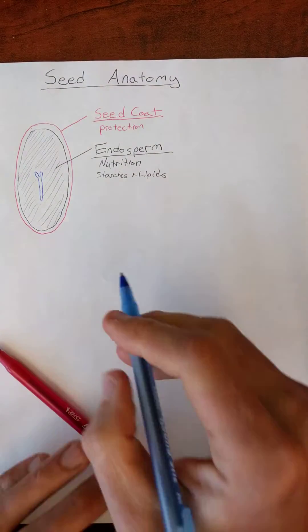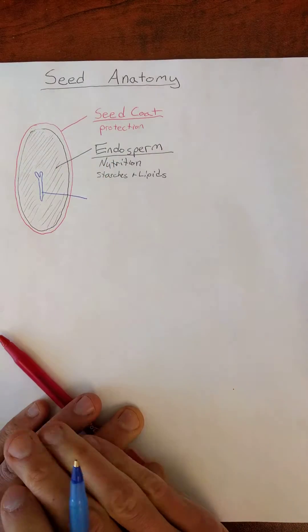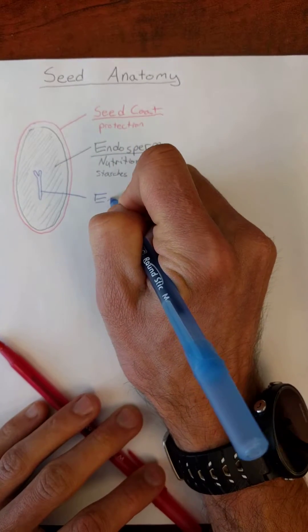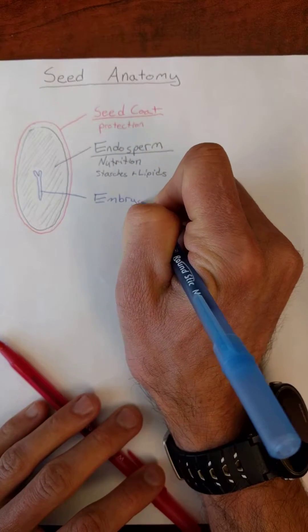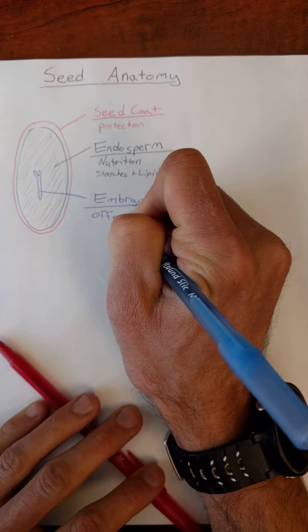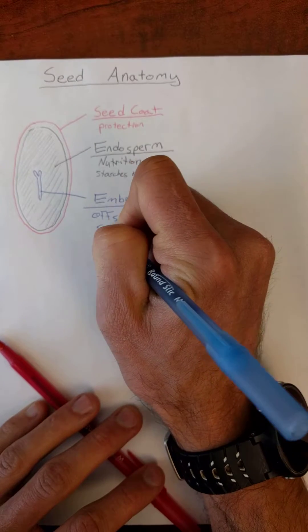Last, the little baby on the inside. Just like developing offspring in animals, term you know, is embryo. Offspring from sexual reproduction.